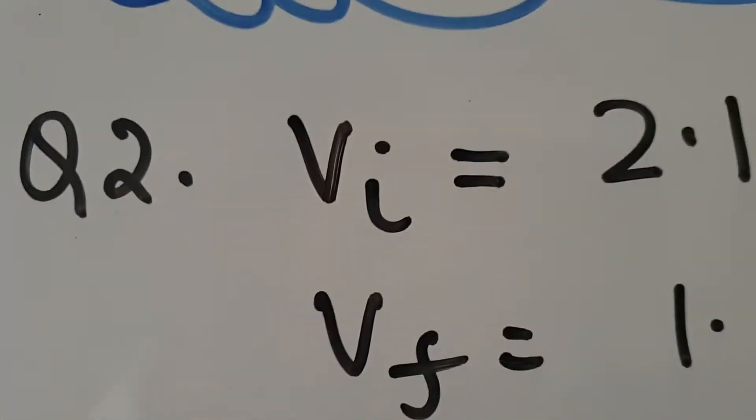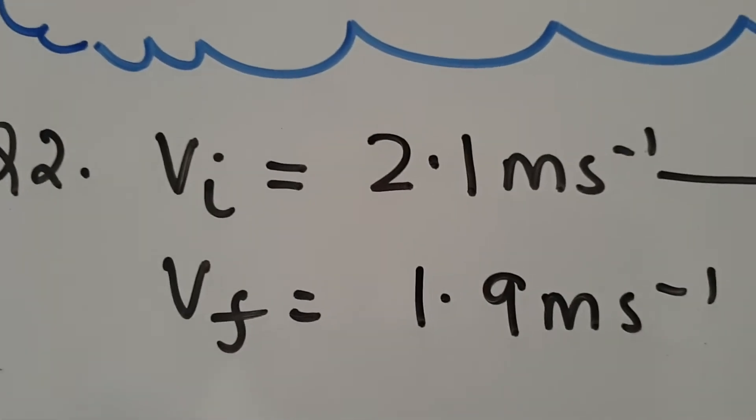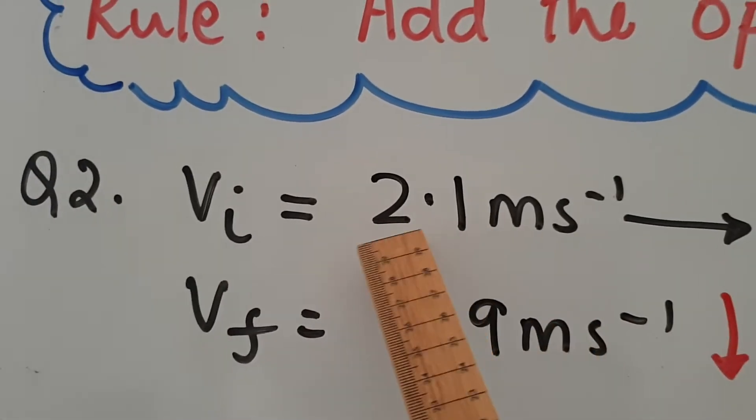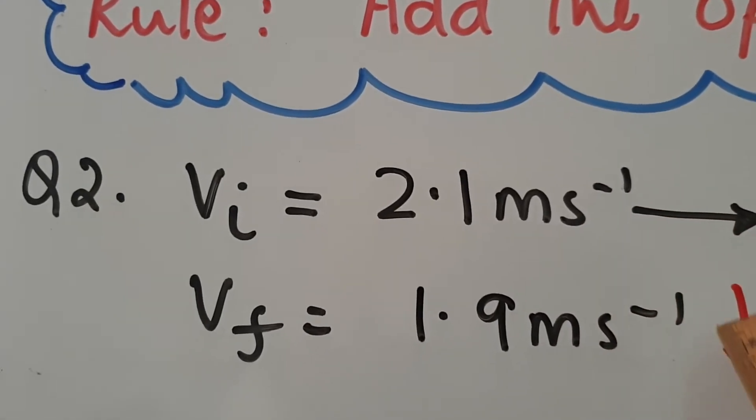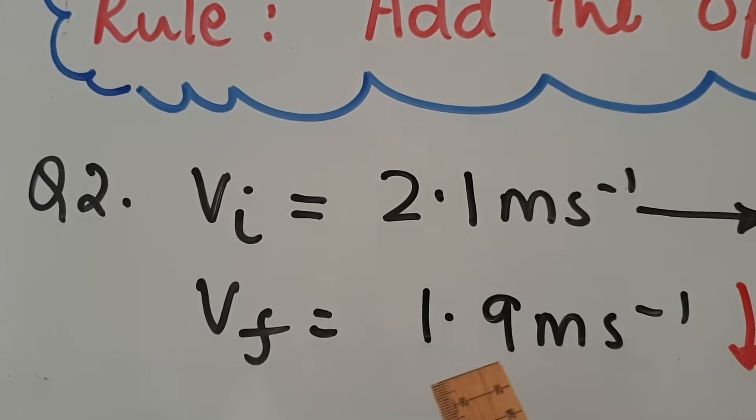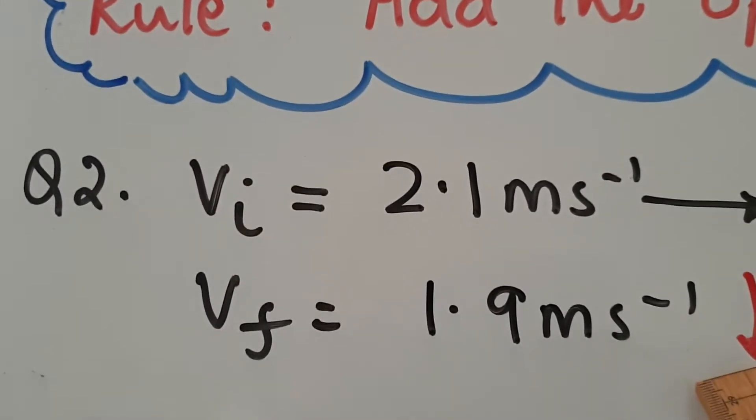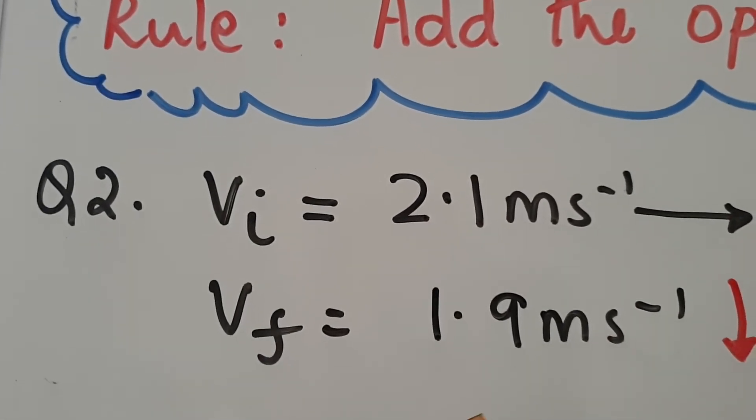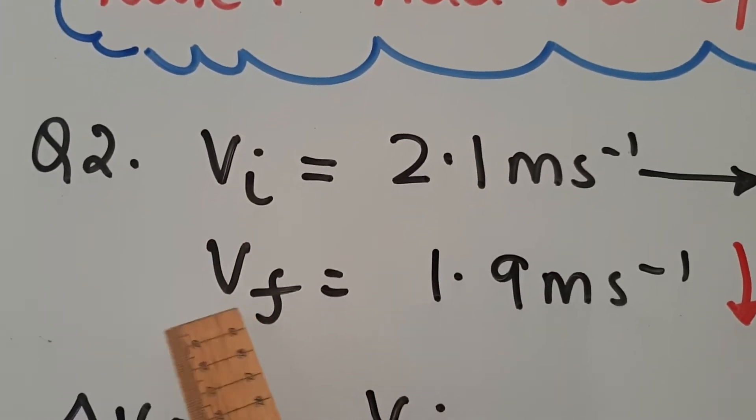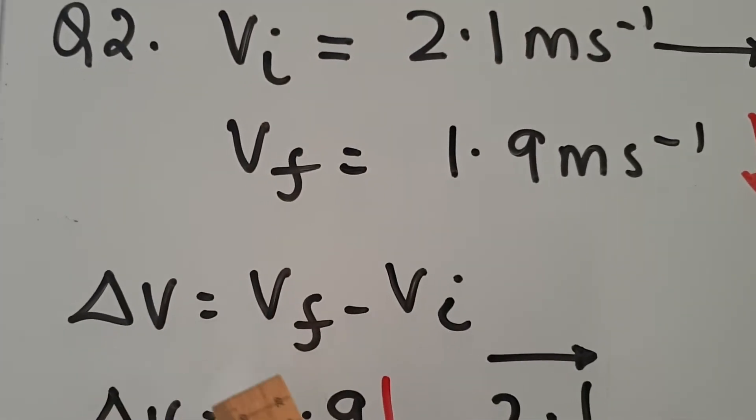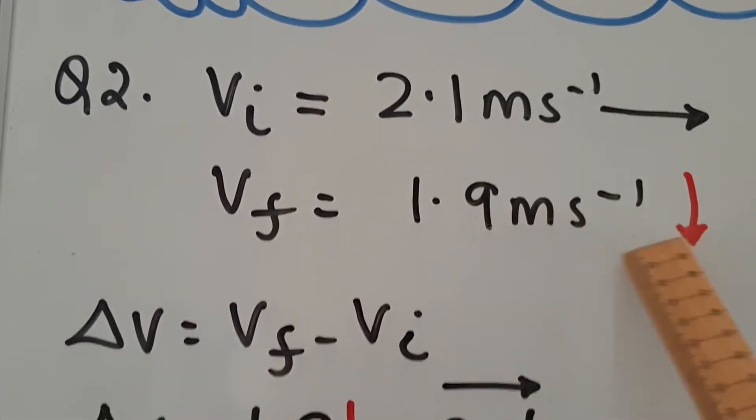So it's about a game of pool. The initial velocity is 2.1 meters per second. So a ball goes 2.1 meters per second, it hits something and it gets deflected. And so the velocity after it gets deflected has a change in size as well as direction. So what we have to do is find the change in velocity. So what's important is you identify which one's initial, which one's final. The change in velocity is VF minus VI. So VF is the 1.9 downwards.